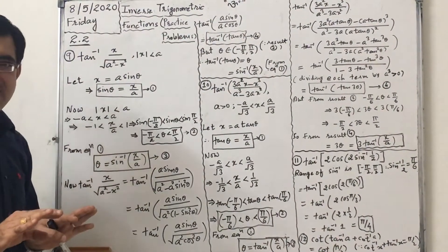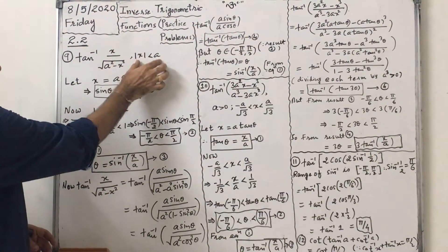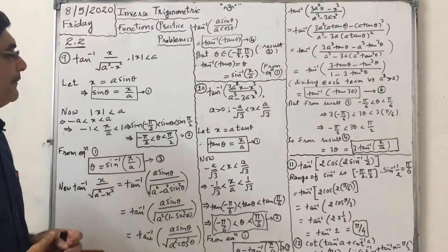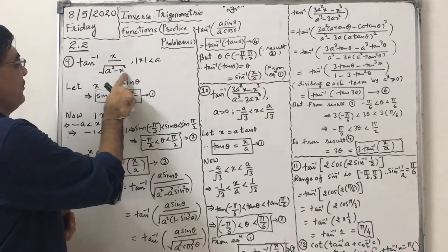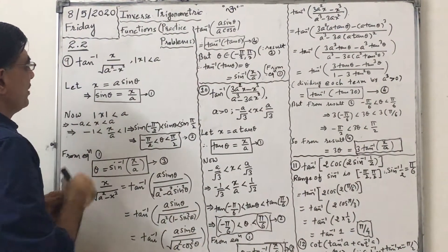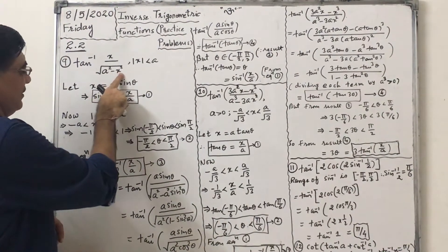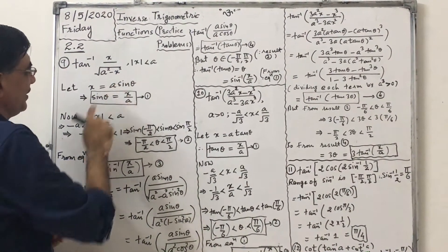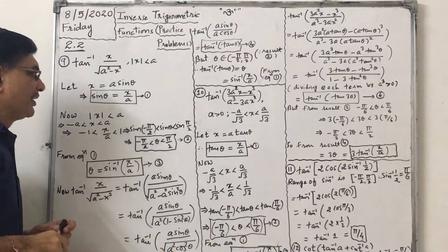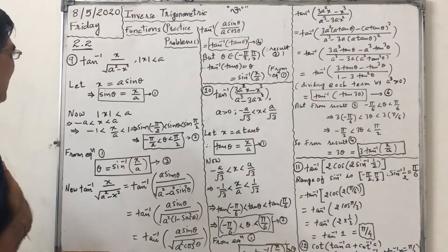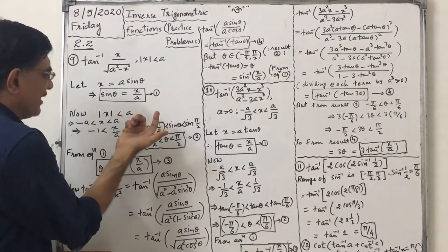We have to just simplify this. This is the condition: mod x less than a. In that case, we can see a² minus x². So x can be assumed as a sin θ. So sin θ will be x by a. So first of all, if I want to write theta equals to sin⁻¹(x/a),